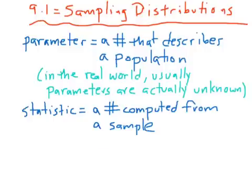Quick example: think about figuring out the average height of all people in the world. That's a parameter, because the population is all people in the world. A statistic would be the average height of 100 randomly chosen people. If it comes from the whole population, it's a parameter. If it comes from a sample, it's a statistic.